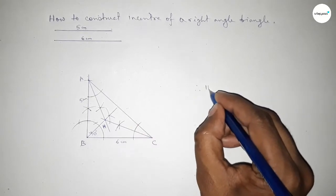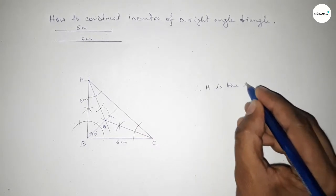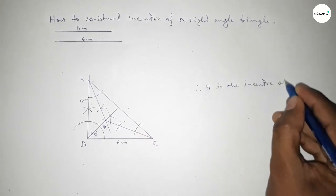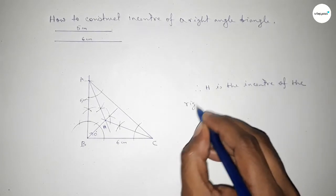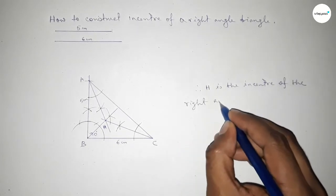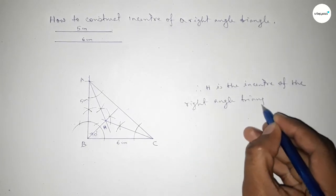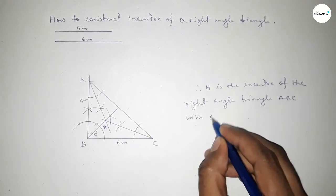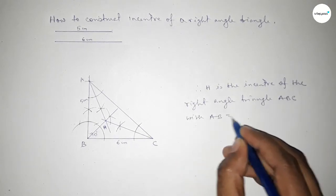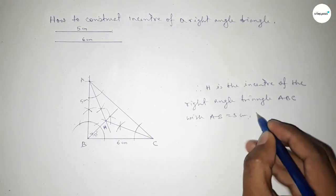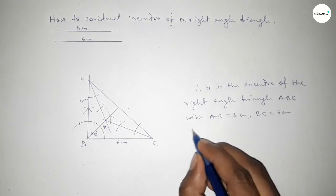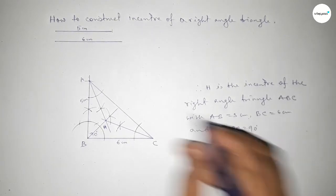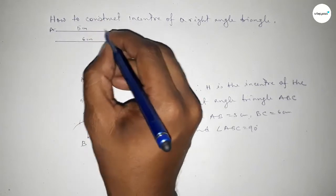The three bisectors intersect at a point H. Therefore H is the incenter of the right angle triangle with sides of length 5 centimeters and 6 centimeters. This is the process to construct the incenter of a right angle triangle using a compass in an easy way.